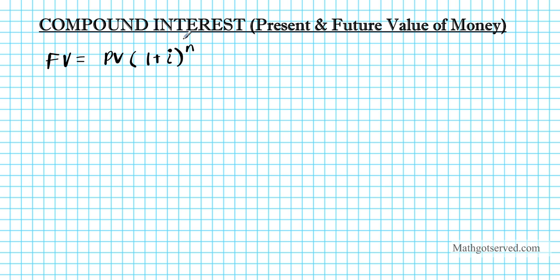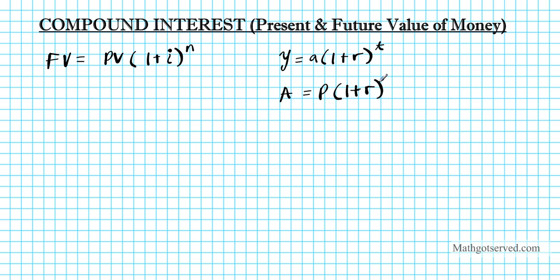So where did this formula come from? This common finance formula came from your basic algebra formula for compound interest, which is Y equals A times 1 plus R to the T. Another variation commonly seen in different texts is A equals the principal P times 1 plus R to the N. All these formulas mean exactly the same thing. FV is basically the future value, which is the same thing as Y and A.